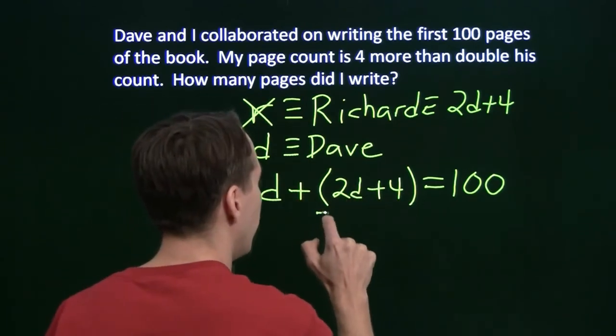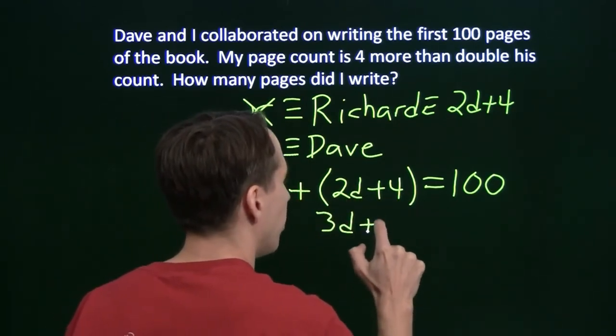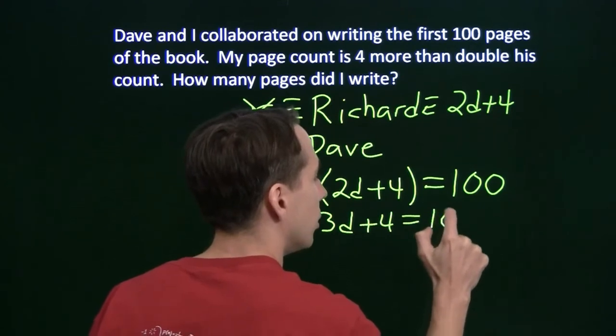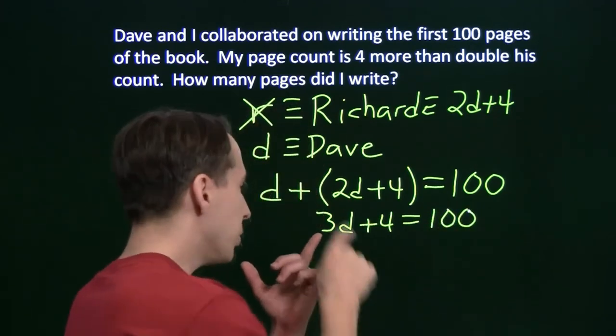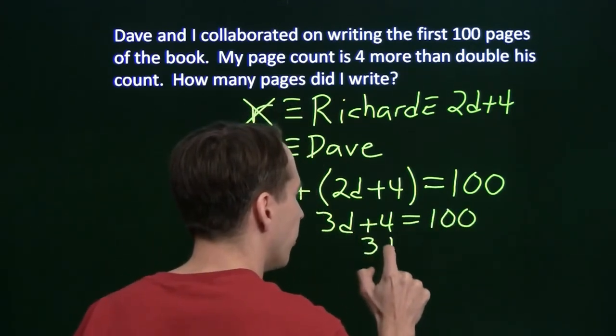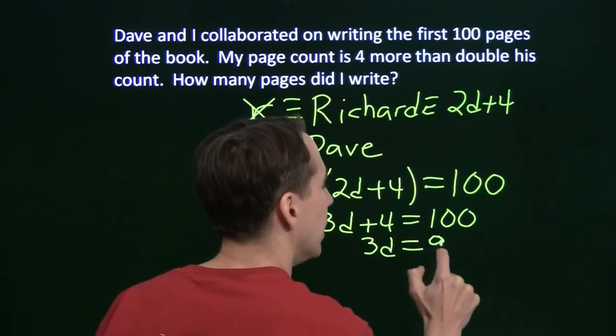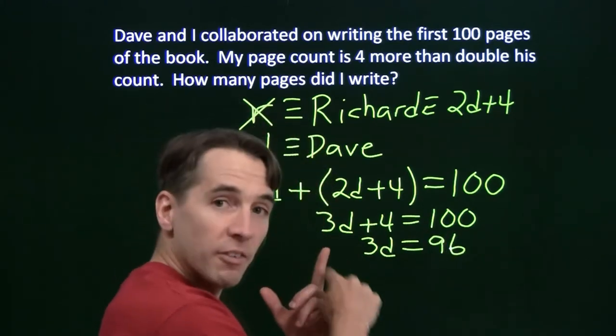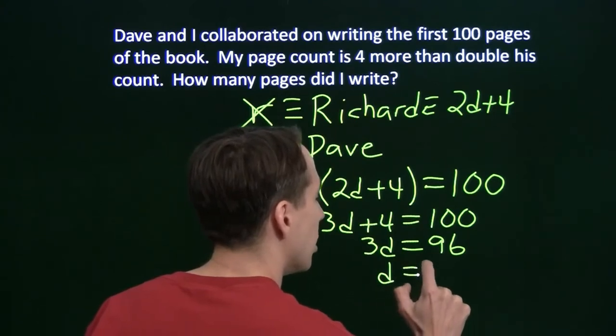We'll simplify the left side here. We'll have 3d plus 4 is 100. Isolate the 3d by subtracting 4 from both sides. We have 3d equals 96. And we divide by 3, and we get d is 32.